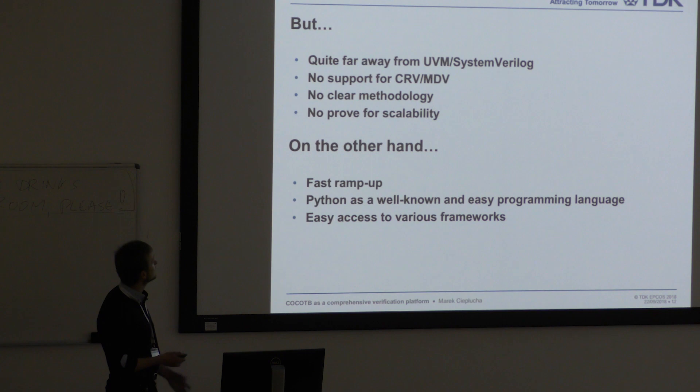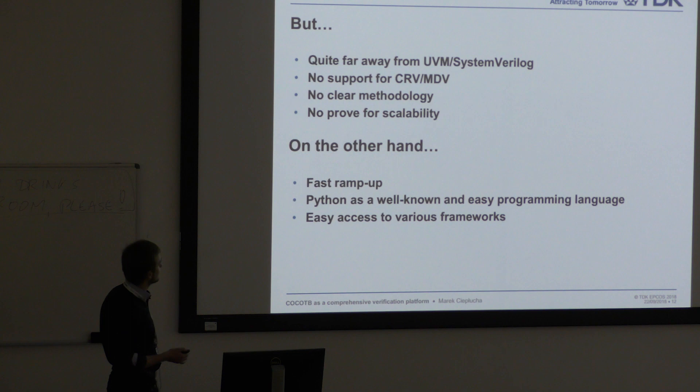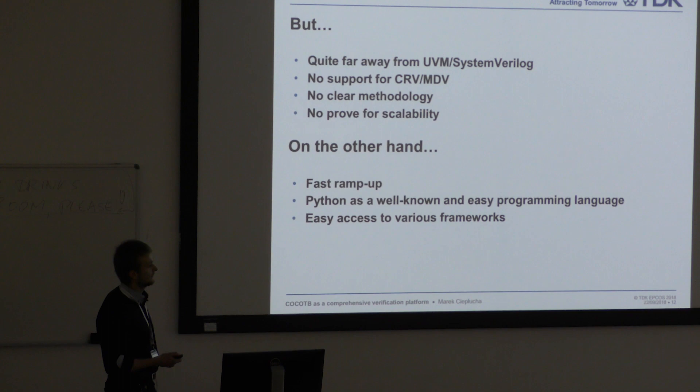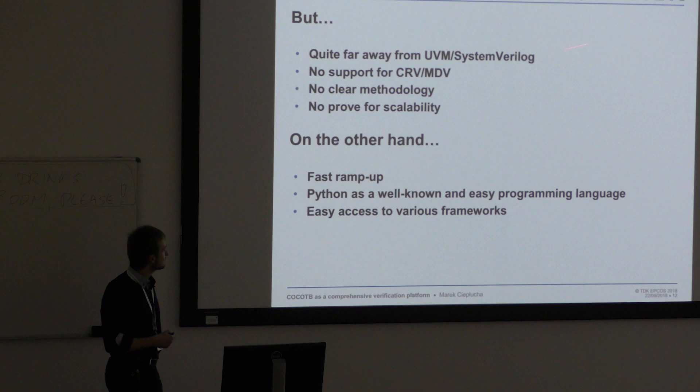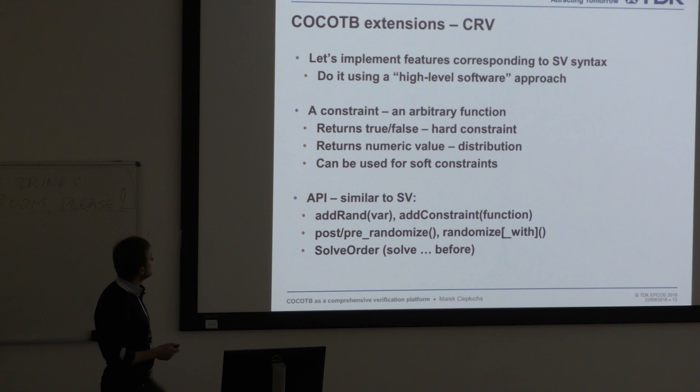CocoTB is quite different from SystemVerilog and UVM, making it difficult to persuade people to use it. There is no support for constraint randomization and metrics-driven verification, no clear methodology for how to use it, and probably most importantly there is no proof of scalability. But on the other hand it has fast ramp-up, it's fun, Python is easy, and has various frameworks.